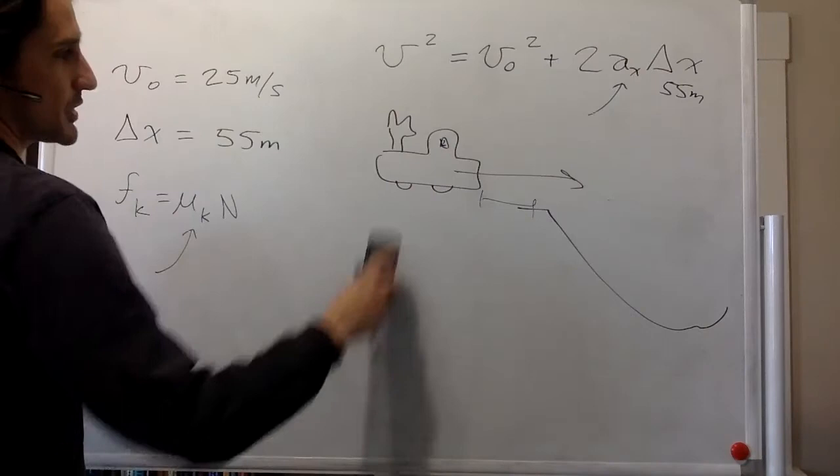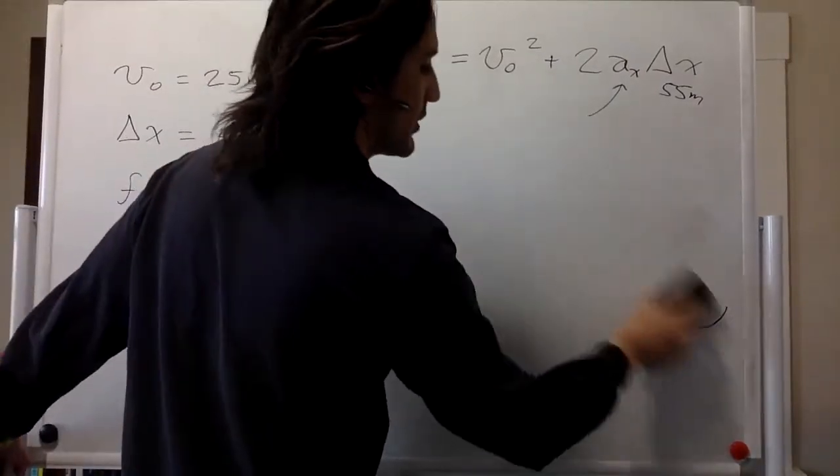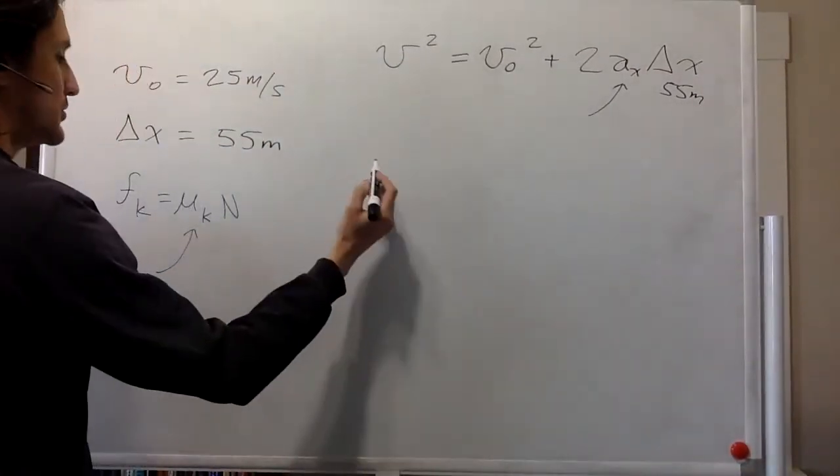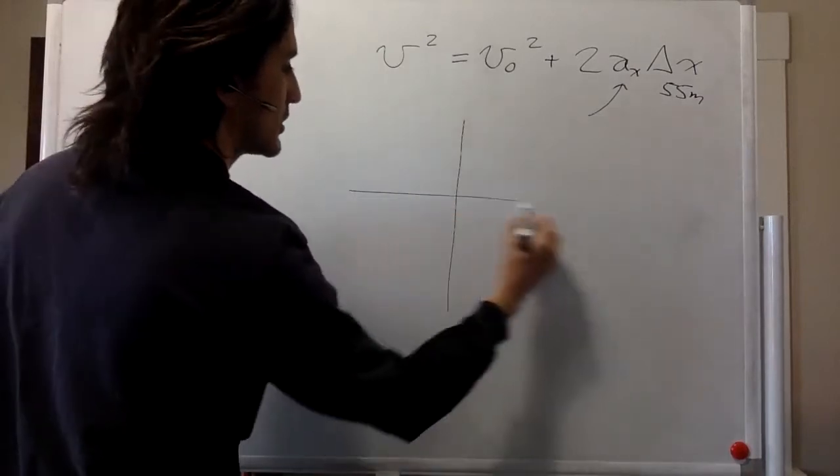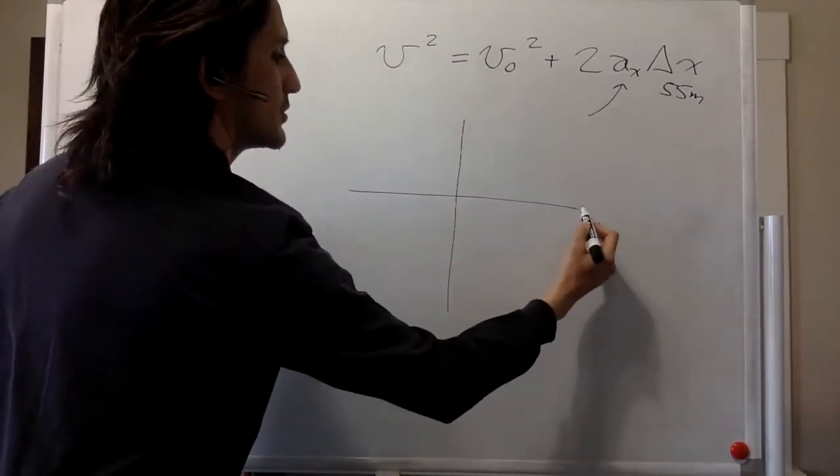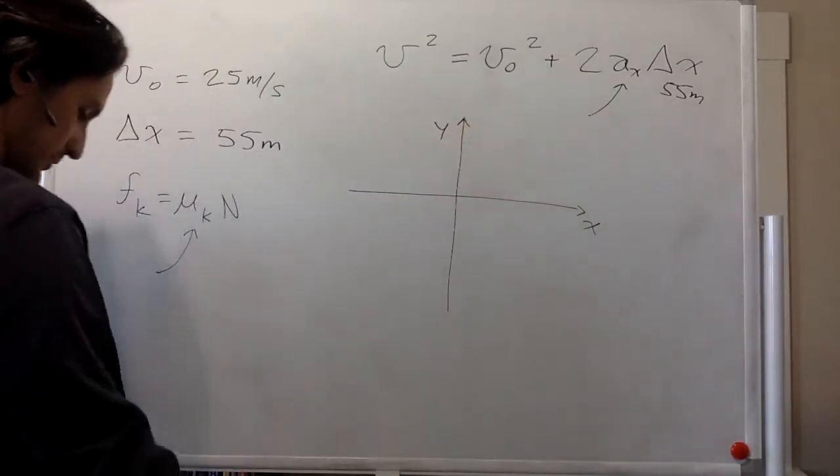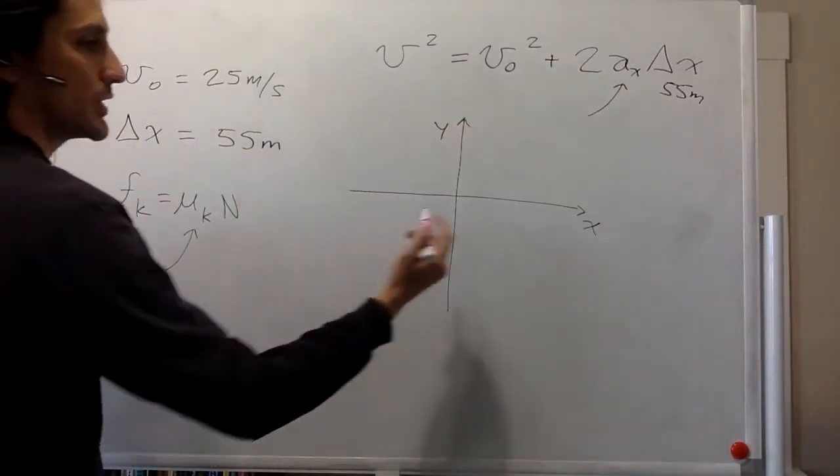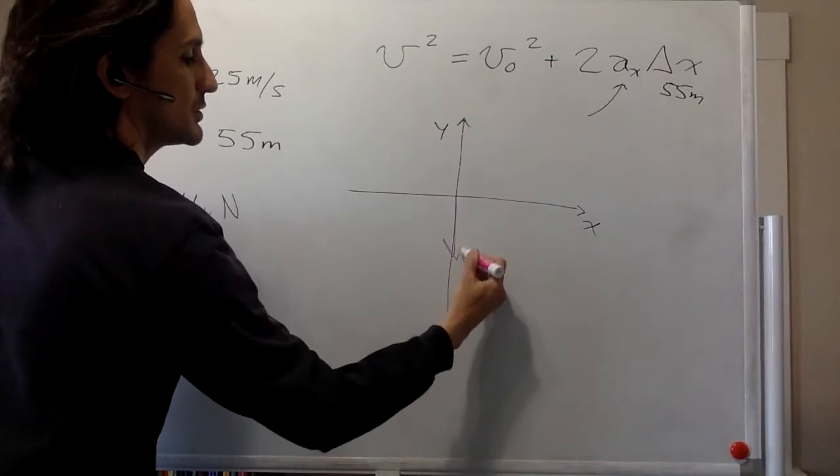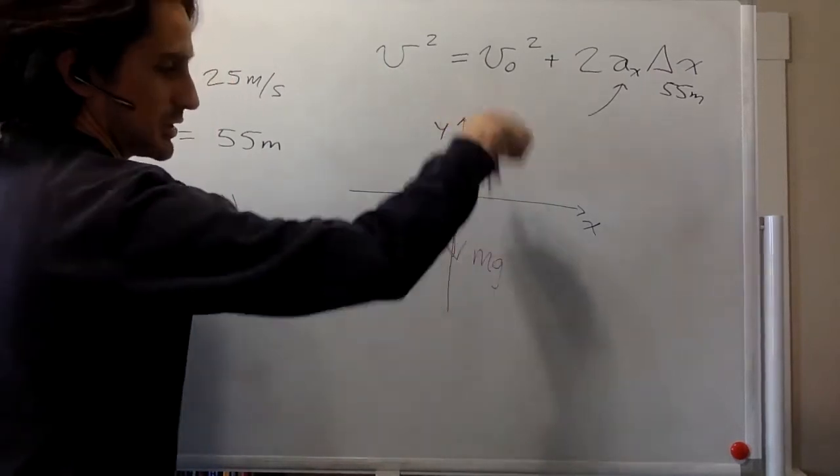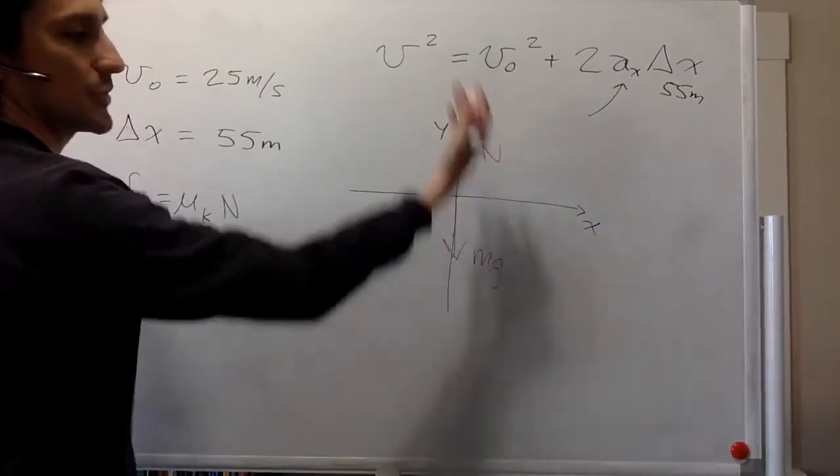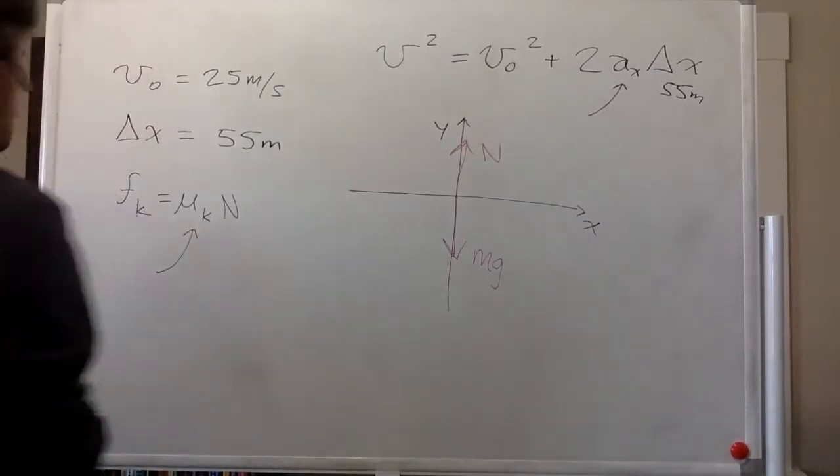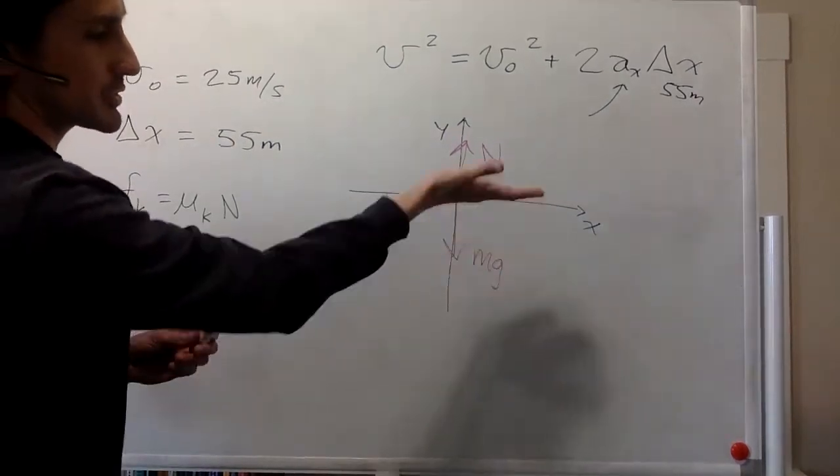So we go from the pictorial representation, which is very pictorial in this case, to the free body diagram. So we have x and y. We have mg, the weight, acting straight down. There's no angle or anything in this case. We have the normal acting straight up. This pickup truck is not moving in the vertical direction, right?